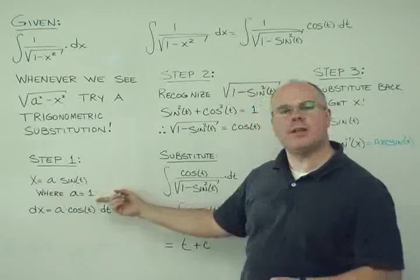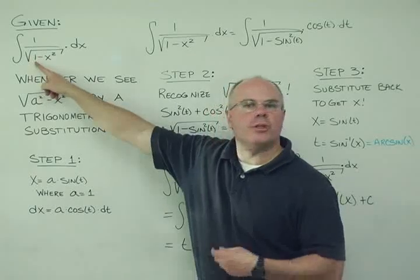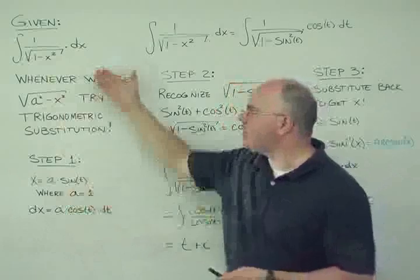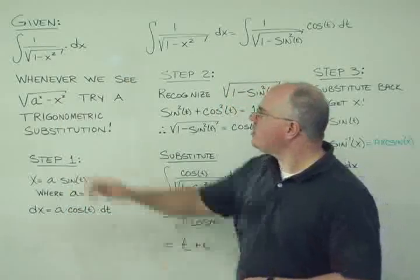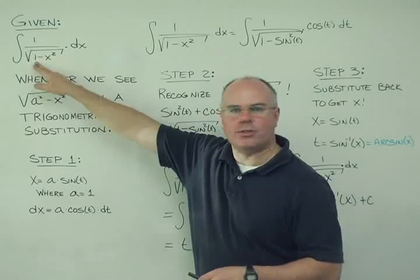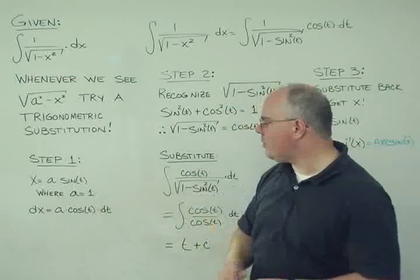In this case, I'm going to set it equal to 1, because that value is 1. So if this were something like 25, I might set a equal to 5, or something of that nature. So whatever that value is, I want to set a equal to the square root of that initial constant. So in this case, it's 1, and the square root of 1 is 1, so I'm going to use a equals 1.